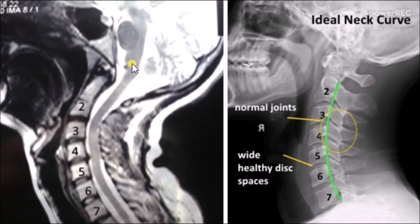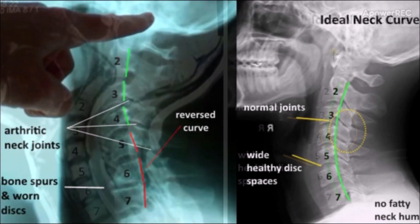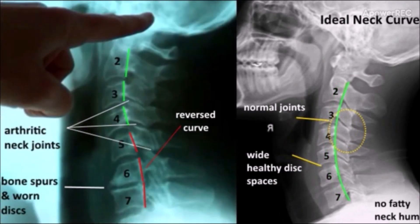On the MRI I can see the spinal cord, a disc bulge, quite an exaggerated curve in the neck, and even a fatty neck hump. On the X-ray, I'm looking for arthritis — I can see bone spurs off the front, much clearer than on MRI. I can clearly see the facet joints, measure angles between each vertebra, and draw in where the ideal neck curve should be.